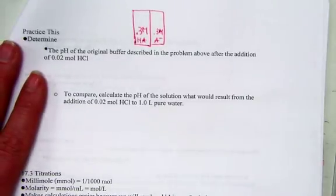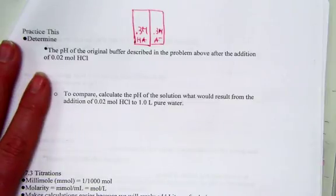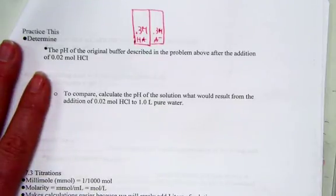Suppose we wanted to calculate the pH of the original buffer described in the previous problem after adding strong acid, 0.02 molar. Adding strong acid should cause the reaction to change pH. It should decrease on our pH scale.